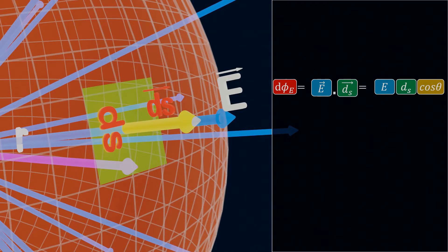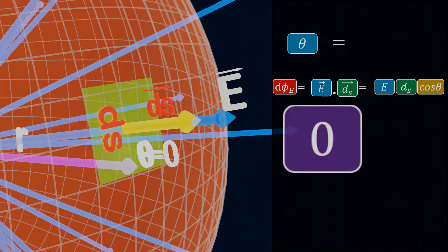Here theta represents the angle between the area vector and the electric field vector, and both of these vectors are pointing outward normal. Therefore, the angle between these vectors is 0 degrees.